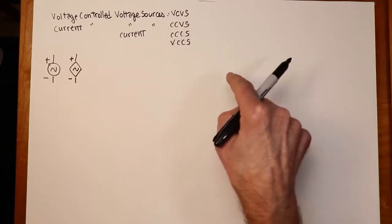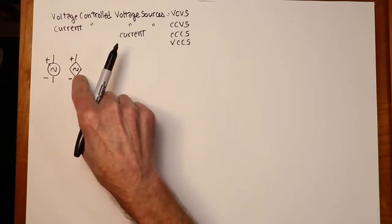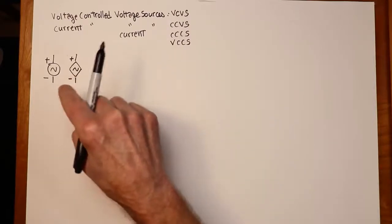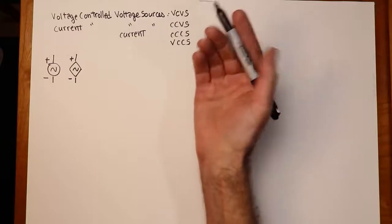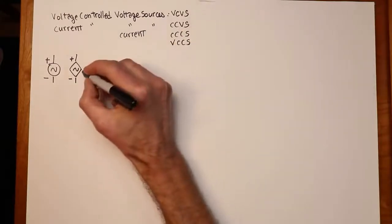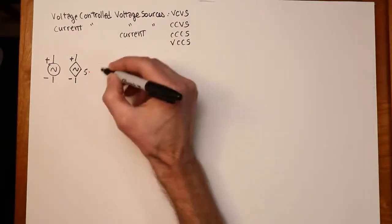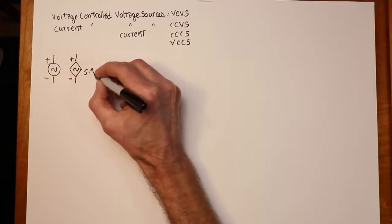So for example, if this was a voltage controlled voltage source, we wouldn't say it's nine volts. We would say it's something like five times some other voltage, voltage A.